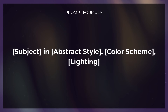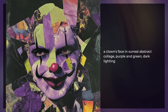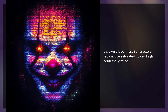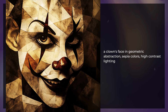We also have: subject, abstract style, color scheme, and lighting — to get a nice abstract style of image. A clown's face in digital glitch style with neon colors and glowing lights creates a very unique digital image. Switch to surreal abstract collage mentioning purple and green with dark lighting adds something to it. ASCII characters with radioactive saturated colors and high contrast creates a really cool image. Changing to geometric abstraction with radioactive saturated colors gives a cool painted face look, and switching colors to sepia still shows the same effect with sepia tones. This formula is great for really nailing down the colors and look of the image so you have a bit more control and aren't just rolling the dice.